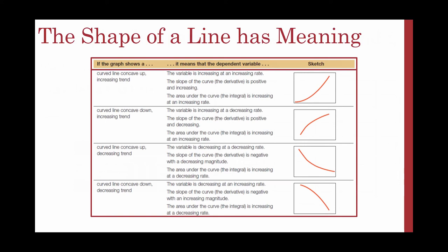A curved line that is concave down also represents an increasing trend, but your variable is increasing at a decreasing rate. The slope of the curve is positive and decreasing, while the area under the curve is increasing at an increasing rate.